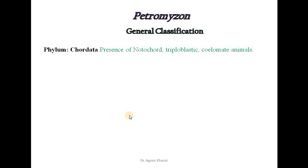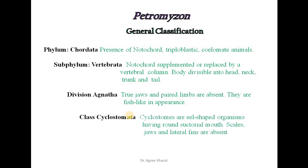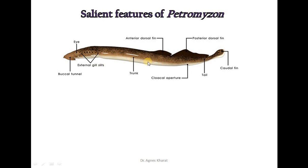The next organism is Petromyzon. Let us study its general classification. It belongs to phylum Chordata, subphylum Vertebrata, division Agnatha, class Cyclostomata, and genus is Petromyzon. Here is a diagrammatic representation of Petromyzon. The body is simply divided into head, trunk and tail region. Mouth is suctorial, a pair of eyes are present, and external gill slits are present without operculum.